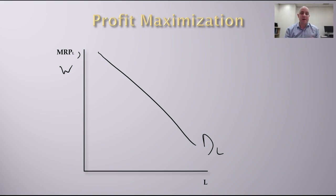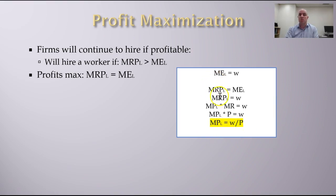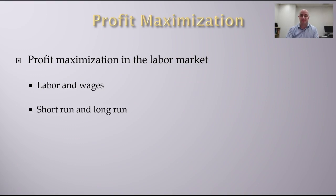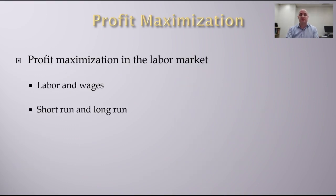This is why and how you form the downward-sloping demand curve for labor. It stems from the fact that you maximize profits — and this is in the short run, where you're only choosing labor. The profit-maximizing condition is where the marginal product of labor equals the real wage, or equivalently where the marginal revenue product of labor equals the wage. That's how the demand for labor is formed.